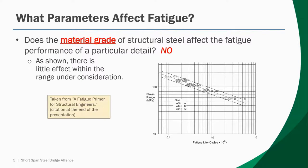Before we discuss AASHTO provisions, we should discuss what parameters actually affect fatigue. First, let's talk about material grade. Does the material grade of structural steel actually affect the fatigue performance of a given detail? The answer is no. As shown in a fatigue primer for structural engineers, there really isn't much effect of material grade for the range under consideration. Within this range, there's really no effect that can be correlated between how steel grade affects performance. It can be assumed that pretty much all steel grades behave the same under a given fatigue load.